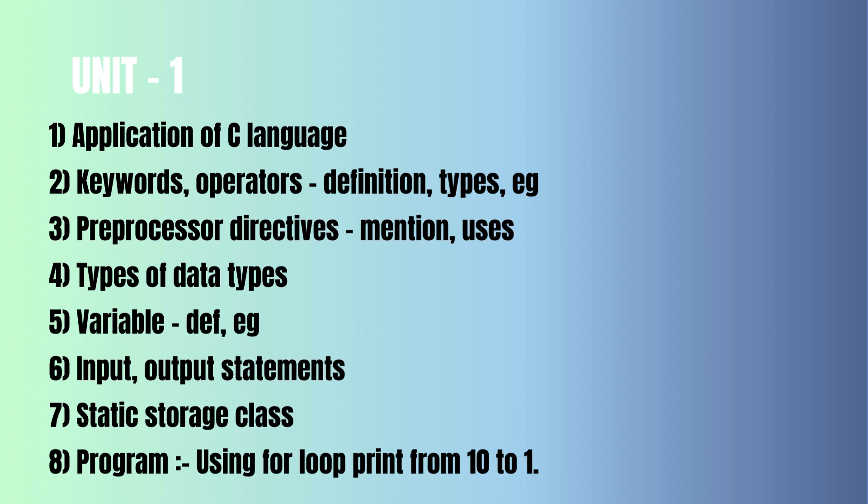Keywords and operators — that is the definition of what keywords are and what operators are. The operators have types. Keywords operators with some examples mentioned. These are the previous programming topics, so that's why we can learn the preprocessed directives. You can mention any two or any four preprocessed directives.